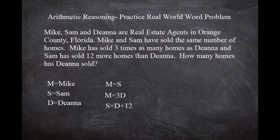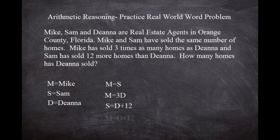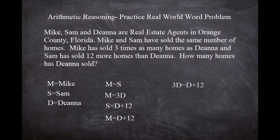Let's look at S equals D plus 12 — this is our key equation because it contains an isolated integer, which means we'll be able to get a concrete answer. We want to reduce it to one variable. Since S equals M, we can replace S with M, giving us M equals D plus 12. And since M equals 3D, we can replace M with 3D. That gives us 3D equals D plus 12 — now there's only one variable.